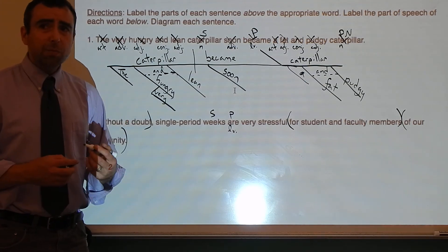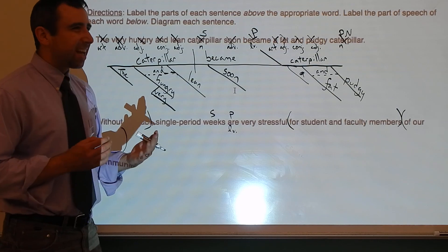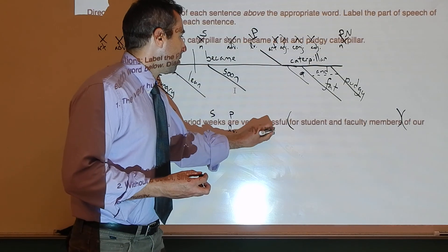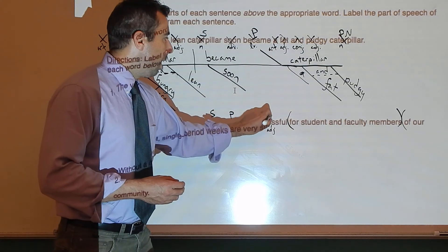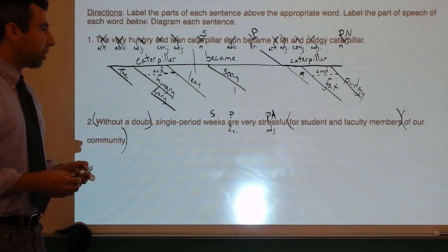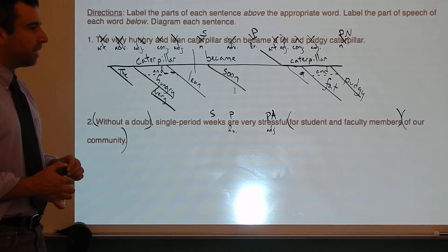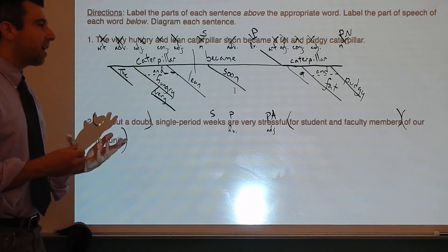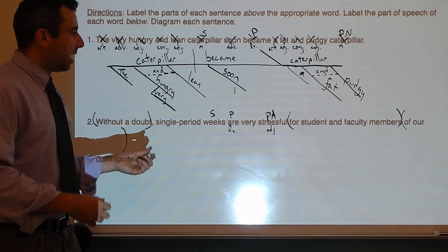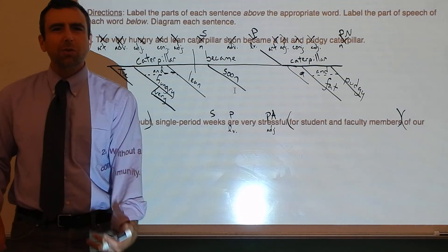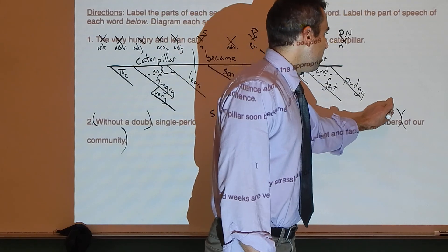Stressful answers the question 'what?' — but is it a predicate adjective, predicate nominative, or direct object? Since 'are' is a linking verb, it can't be a direct object. Stressful is an adjective describing the subject weeks, so it's a predicate adjective. We could also say that student and faculty members — the people for whom this is stressful — function as an indirect object, though I'll put a question mark by it since indirect objects typically follow action verbs.